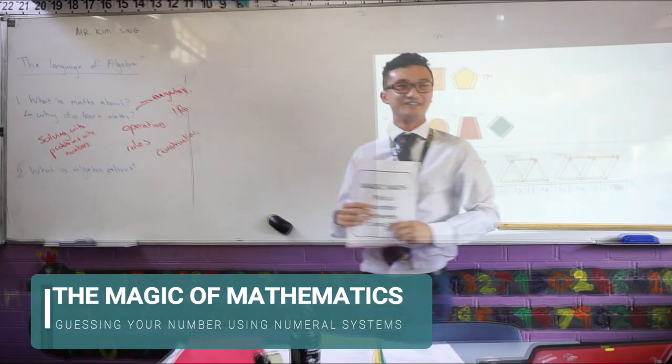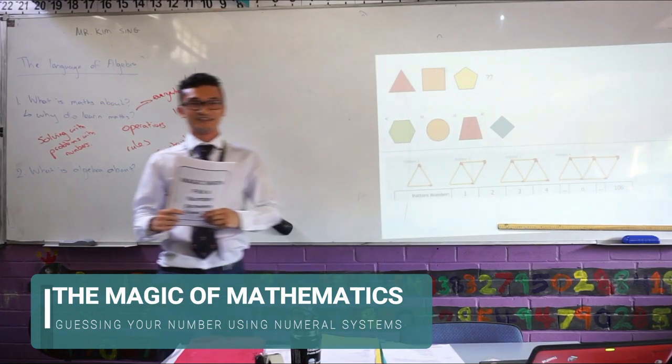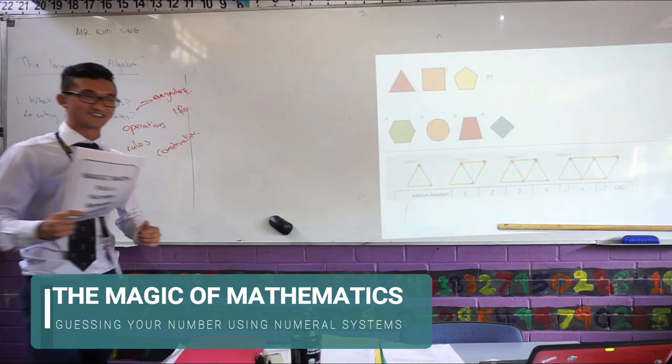This first lesson talks about how mathematics can be a bit of magic. You two, pick a number between 1 and 30. Don't show me but draw on a big piece of paper and show it to the rest of the class so everyone knows.